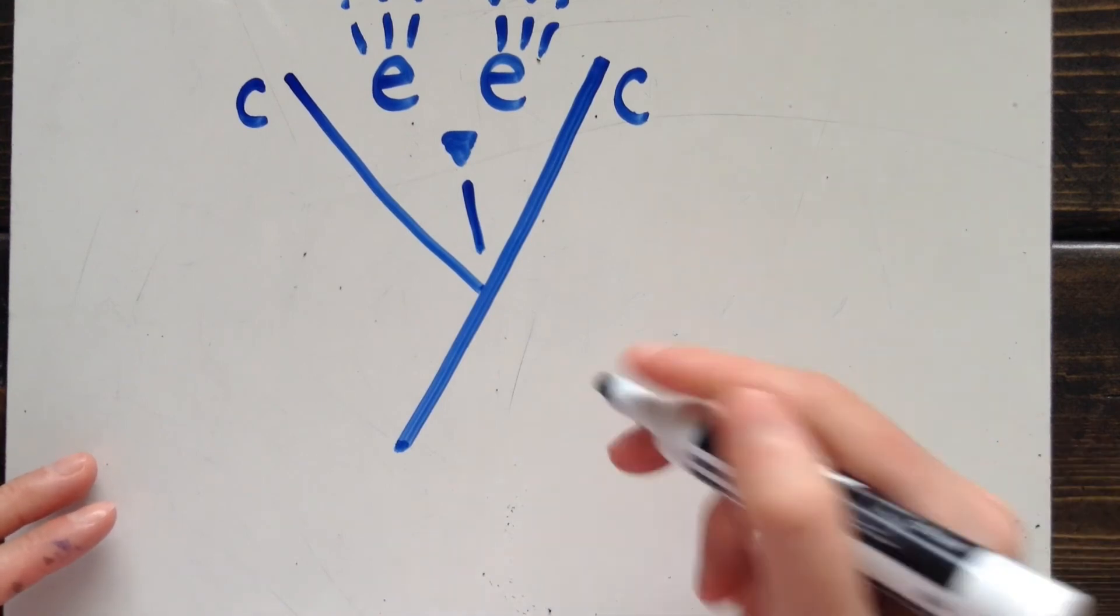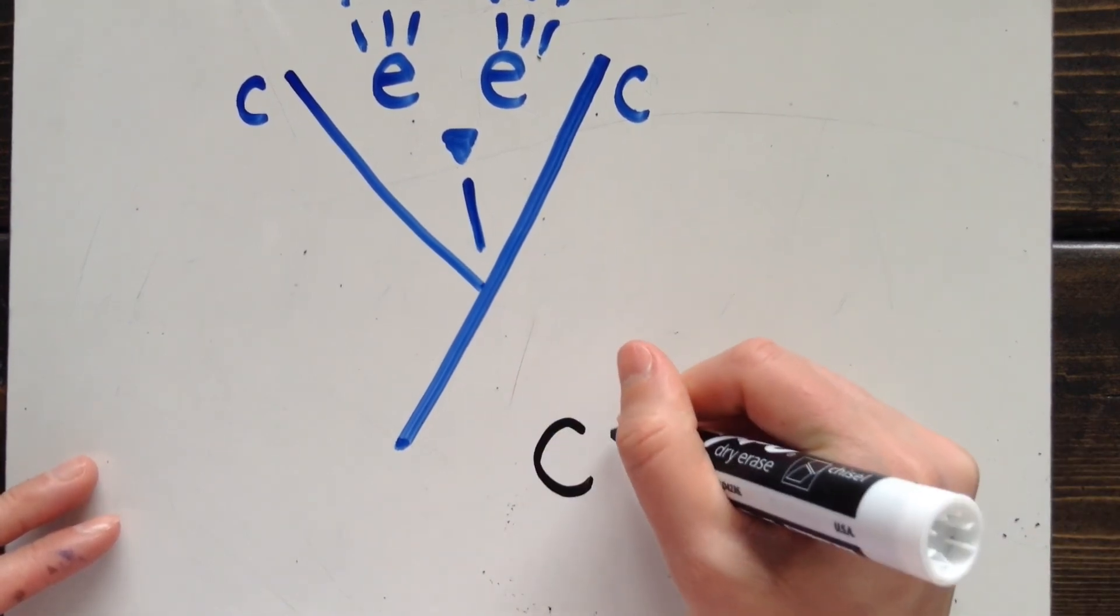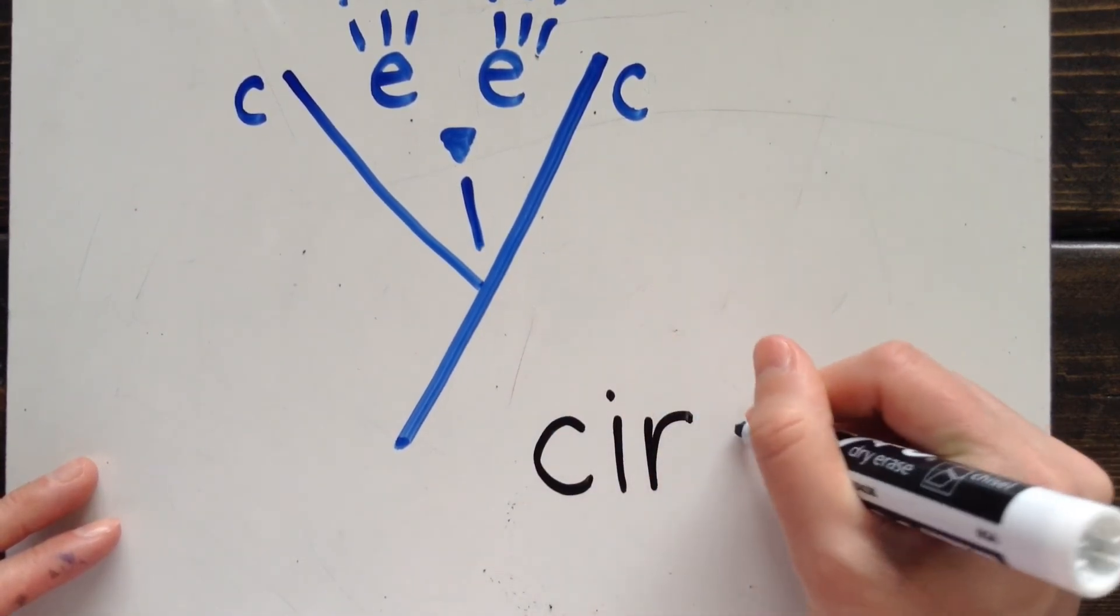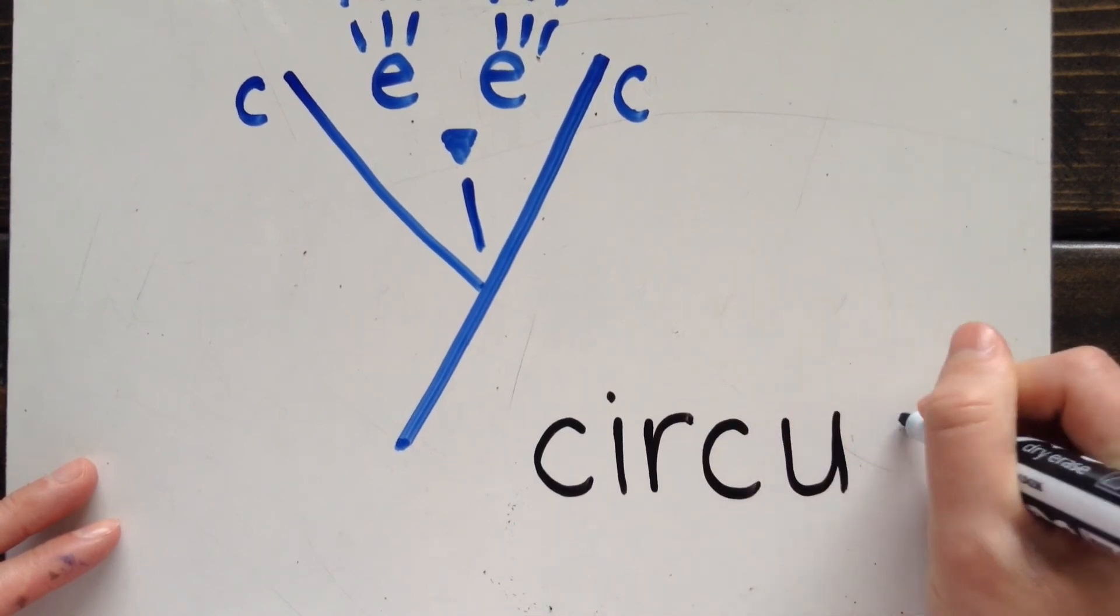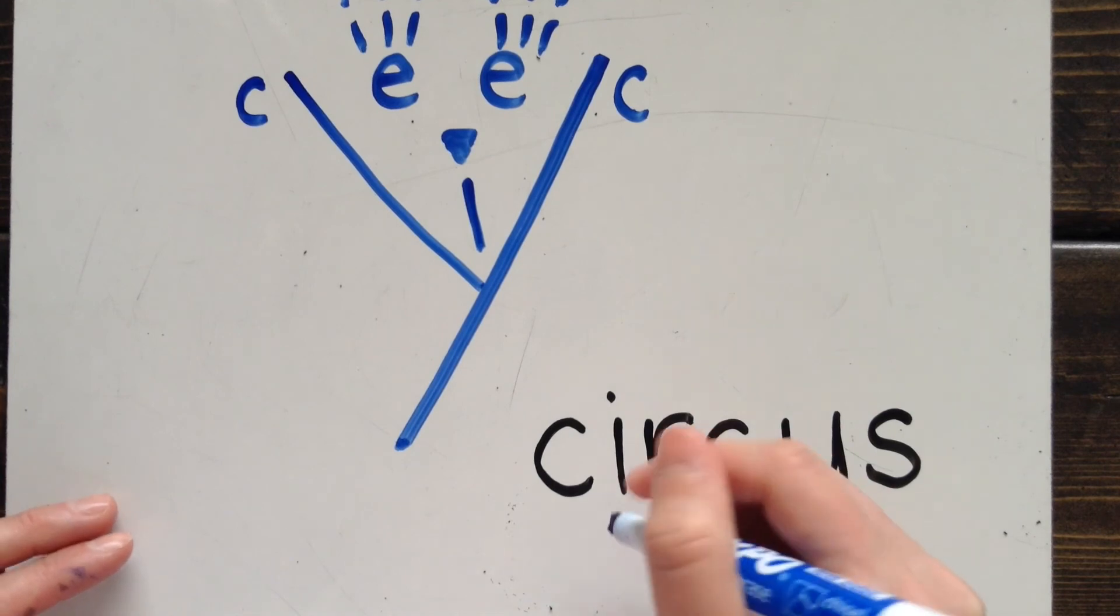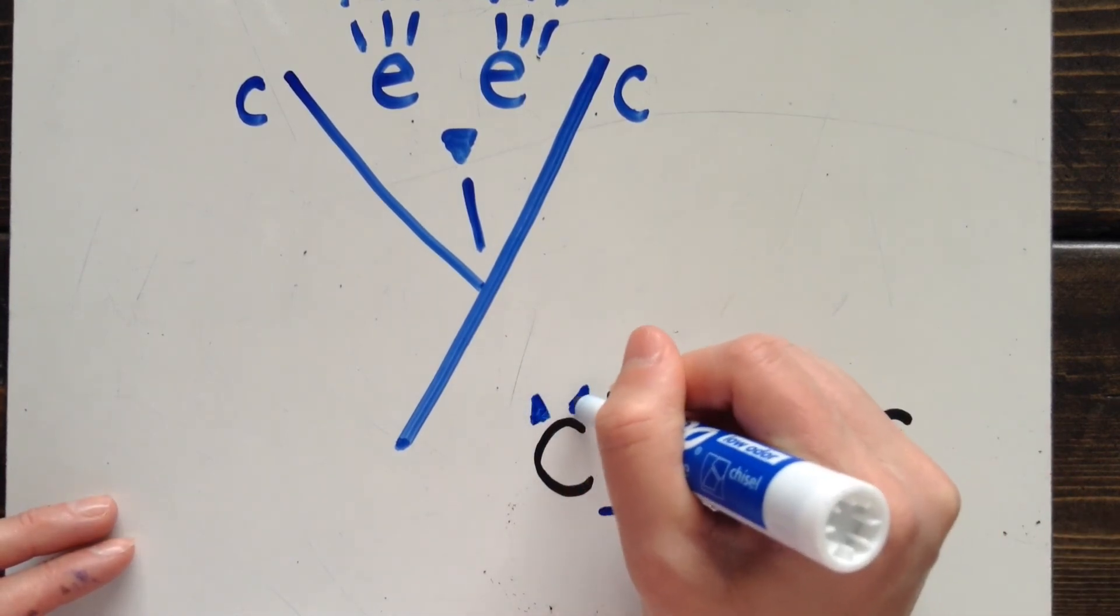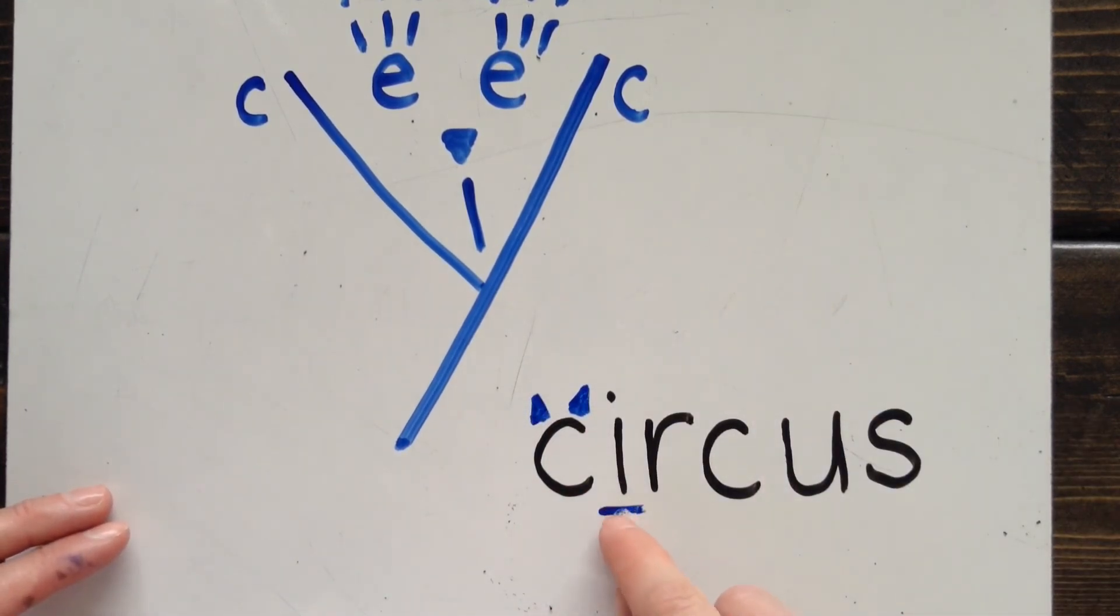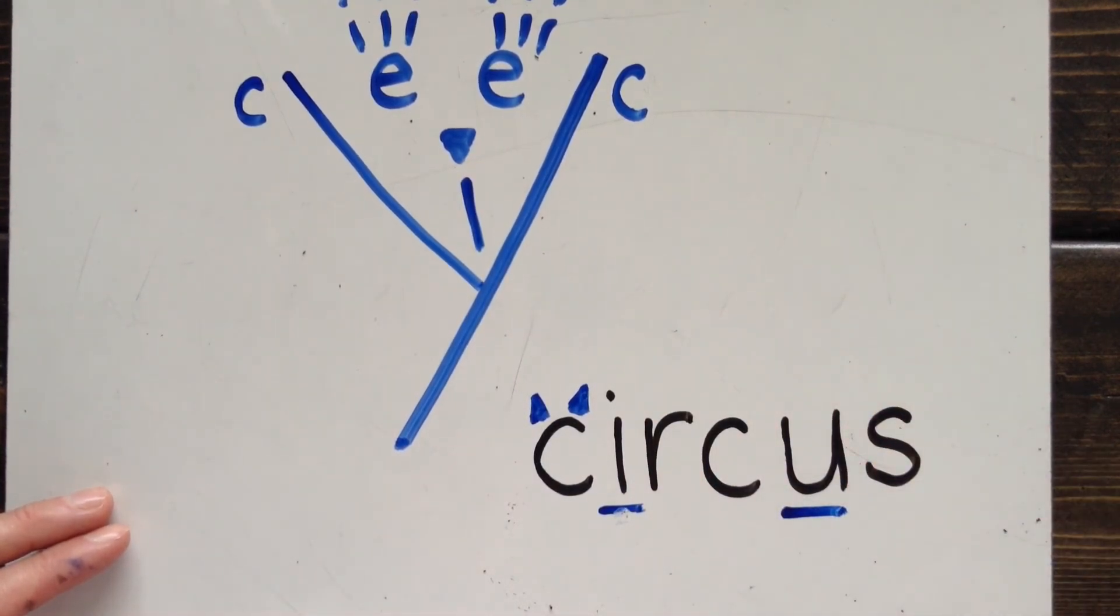Here's another example of a word with two Cs. This is the word circus. My first C is soft. Notice the I. The next C is hard. U is not in my picture. Circus.